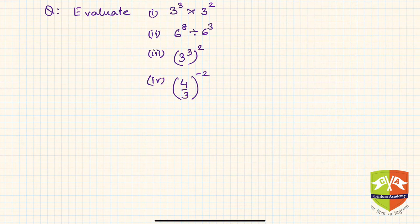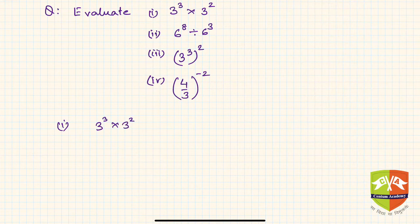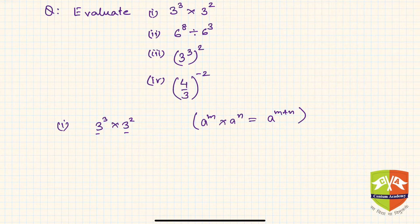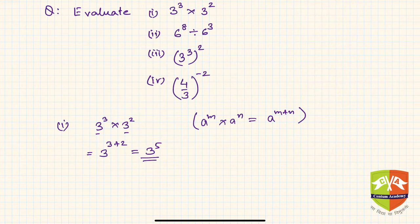The first problem is 3 to the power 3 multiplied by 3 to the power 2. Looking at this, the bases are the same and the powers are different, so the first rule applies: a to the power m times a to the power n equals a to the power m plus n. So it is simply 3 to the power 3 plus 2, which is 3 to the power 5.